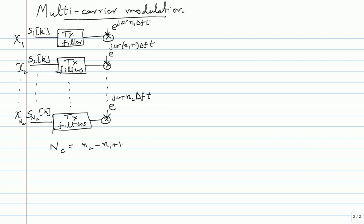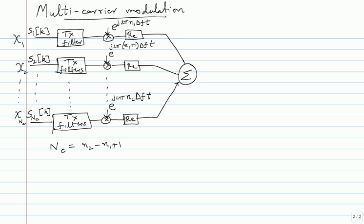When you do OFDM, you will actually let the sub-bands overlap in frequency. But first I'm going to talk about a situation where you don't allow these different bands to overlap. So you do the standard real part conversion and add them all up, producing your passband transmit signal x(t), which then goes through a channel where noise is added.